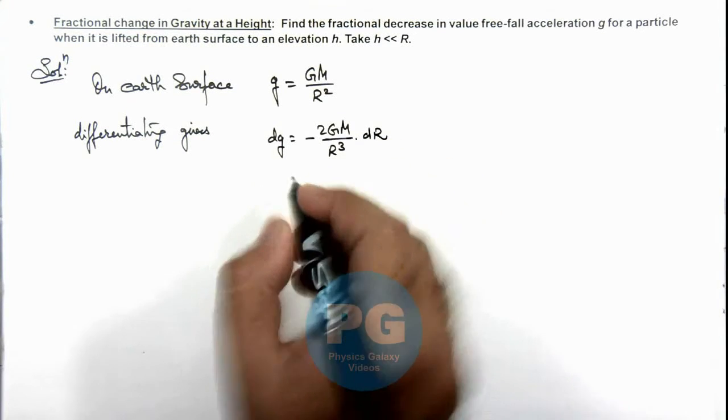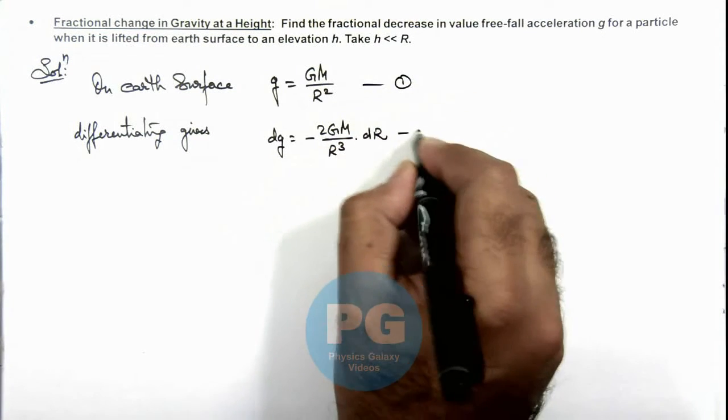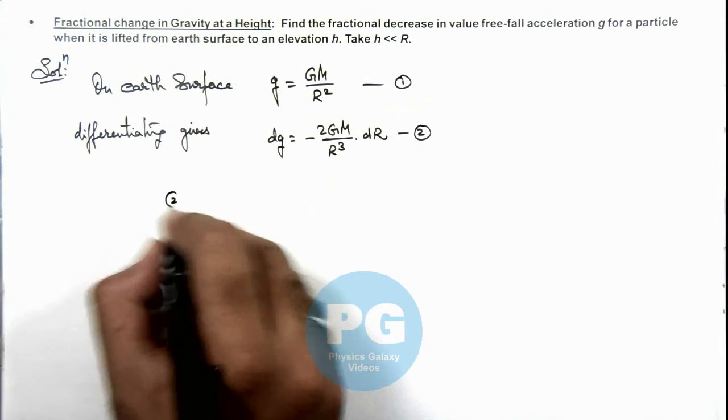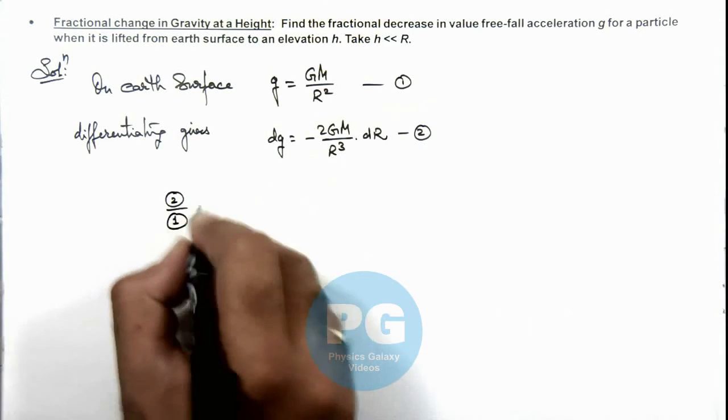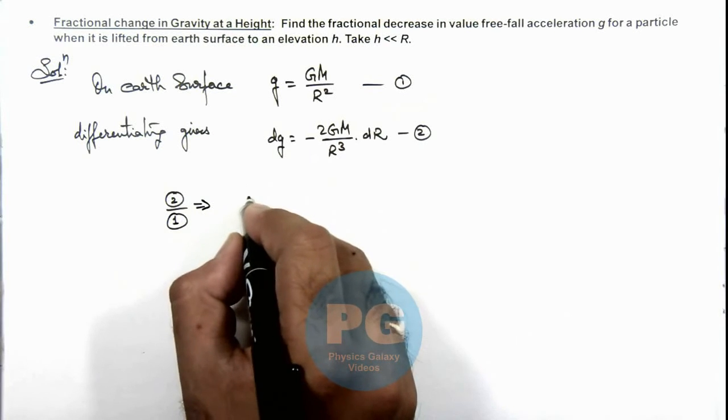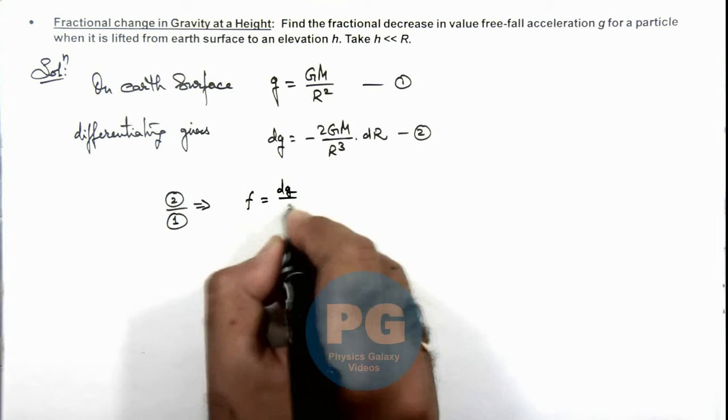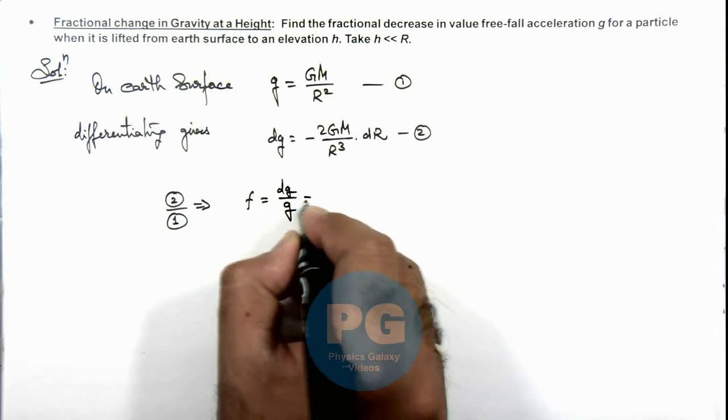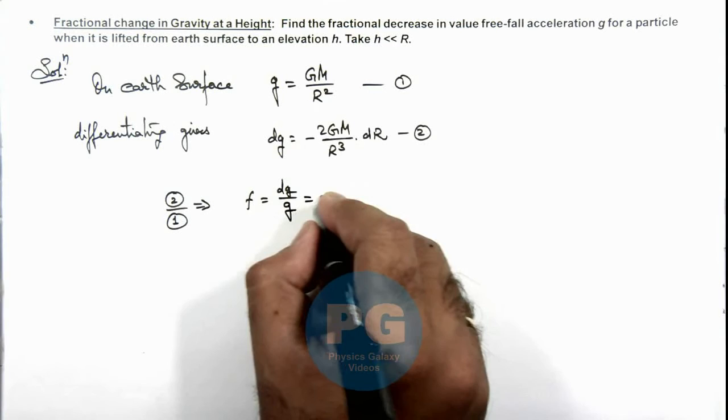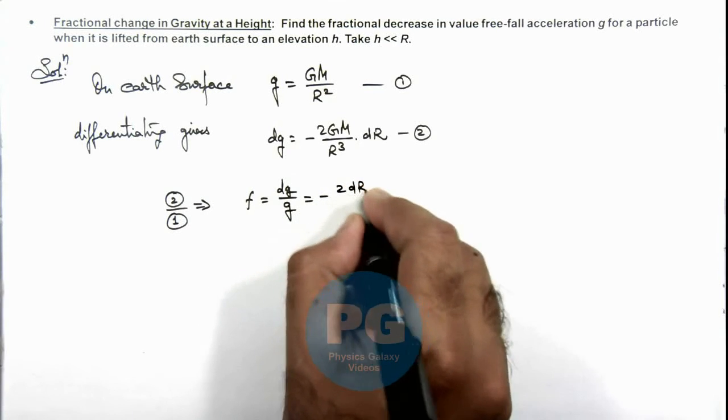So if this is equation 1 and this can be written as 2, then we can calculate 2 by 1, which will result in the fractional change in gravity value, that is dg by g. And that is equal to minus 2dr by R.